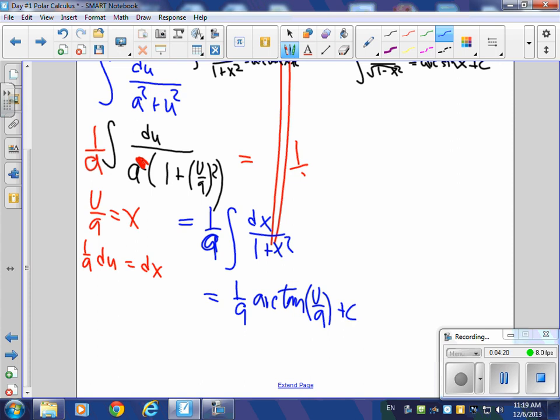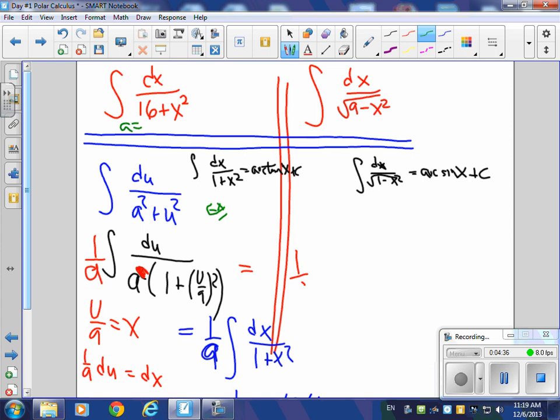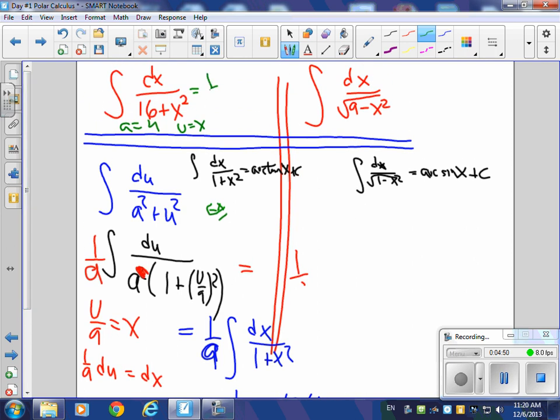Do you see that if I have this a in here, you're going to get a 1 over a out front. So if I had an example like the, oh, let's go to the one that we had at the top. a is the square root of 16, which is 4, and u is equal to x. So the antiderivative, I'm using my formula, 1 over a will be 1 over 4, arctangent of u, which is x over 4, plus c.